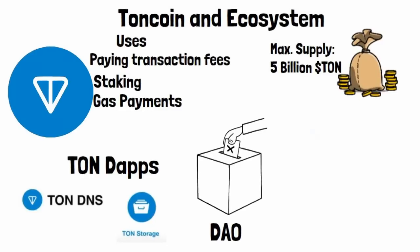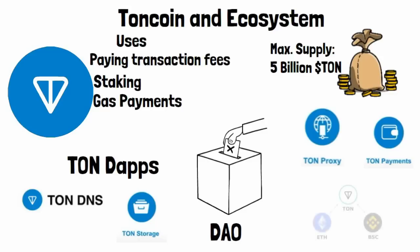With a maximum supply of 5 billion TON Coin, the project ensures that users can actively shape its future. The TON ecosystem also includes services like TON Proxy for safeguarding privacy, TON Payments for fast transactions, and TON Bridge, allowing interoperability between blockchains like Ethereum and Binance Smart Chain.